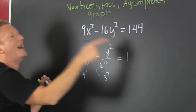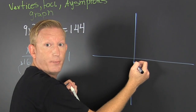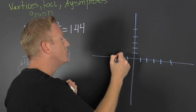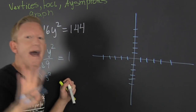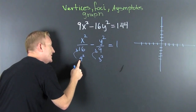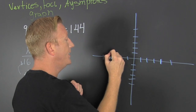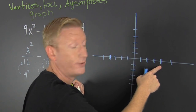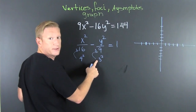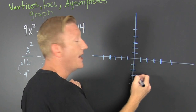We're using the box method. How far do I go in the x direction? I need to look underneath the x — I go 4 far in the x direction. Now let's see how far we go in the y direction. In the y direction, we go 3 far, because that's the value being squared. So we go 3 far in the y direction, and then I make a box.